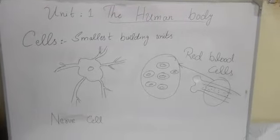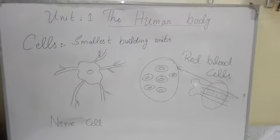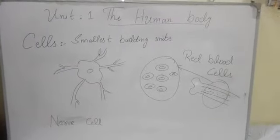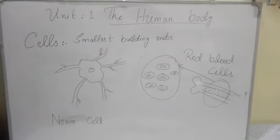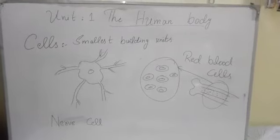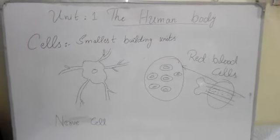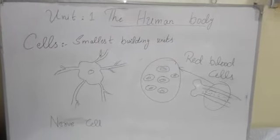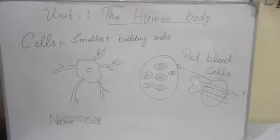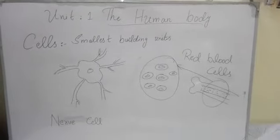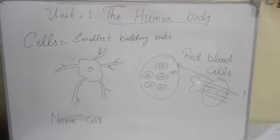Assalamualaikum. Our first chapter name is The Human Body. We will learn about cells — what are cells? Cells are the smallest building units of our body. The smallest unit of our body is cells.